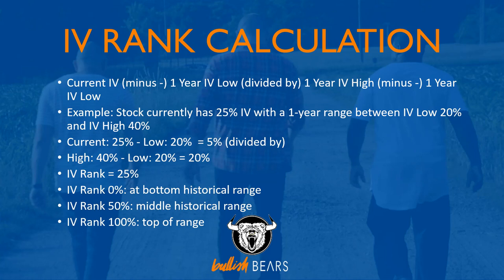I'm going to talk about the calculations — take it in, and then I'll make it easier. Don't get bogged down in the calculations because platforms give it to you automatically. IV rank's calculation works like this: you take the current IV minus the one-year IV low, then divide that by the one-year high IV minus the one-year IV low.